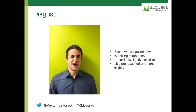You never want your users to become disgusted, because when they become disgusted they become frustrated, when they become frustrated they become angry, and when they become angry sometimes they'll leave your site. The physical characteristics of disgust: the eyebrows are sort of pulled down and almost pulled together, there's a wrinkling of the nose, the upper lip is slightly pulled up, and the lips are loosened and kind of hanging slightly. With disgust, it's kind of a completed emotion — the person is really fed up and making the face like they're disgusted.